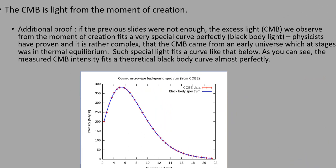The CMB is light from the moment of creation, so here is even more proof. If the previous slides were not enough, the excess light, CMB, we observe from the moment of creation fits a very special curve perfectly. This is a curve right here. It's called a black body radiation curve. Physicists have proven, and it is rather complex, that the CMB came from an earlier universe which at stages was in thermal equilibrium, giving rise to this black body curve. Such special light fits a curve like that below. As you can see, the measured CMB intensity, which is the red line here, fits a theoretical black body curve almost perfectly. Okay, the blue line would be a theoretical black body curve.